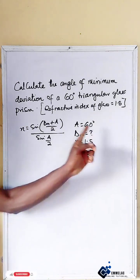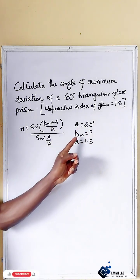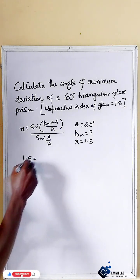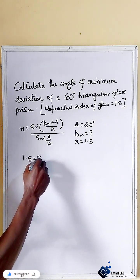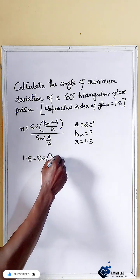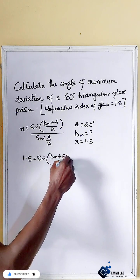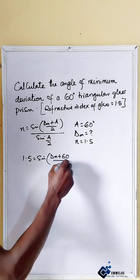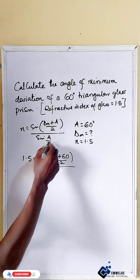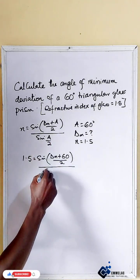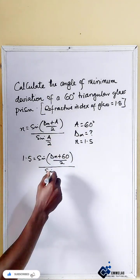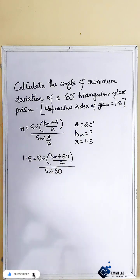Plugging all these parameters in and looking for dm: we have 1.5 equals sine of (dm plus a, which is 60) all over 2, then all over sine of a, which is 60, divided by 2 — giving us 30.